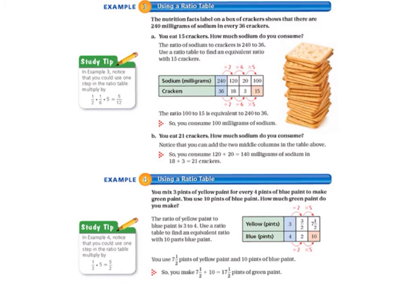Moving on to Example 3, using a ratio table. The nutrition facts label on a box of crackers shows that there are 240 milligrams of sodium in every 36 crackers. We eat 15 crackers — how much sodium did we consume? The ratio of sodium to crackers is 240 to 36, so we're going to use a ratio table to find an equivalent ratio with 15 crackers. We start with the ratio given: 240 milligrams of sodium per 36 crackers, and we cut that in half by dividing by 2.